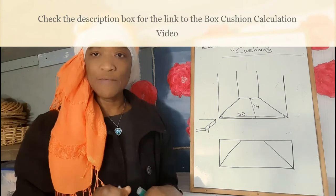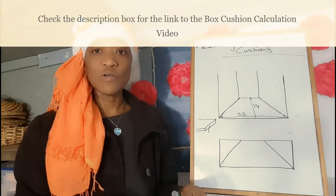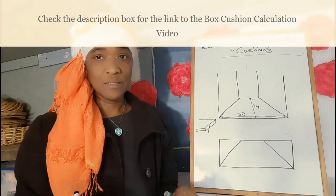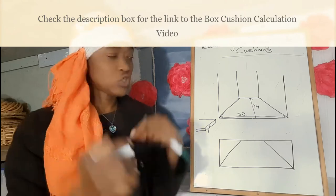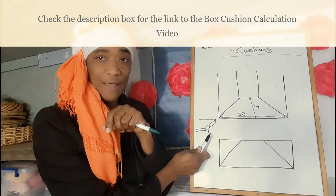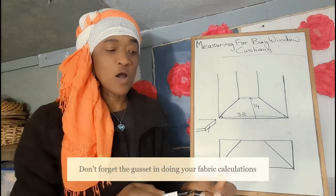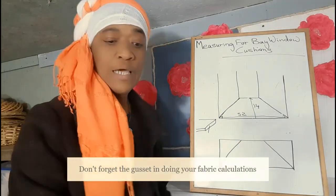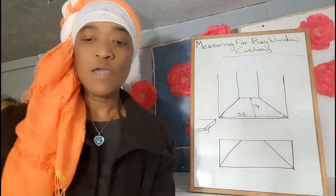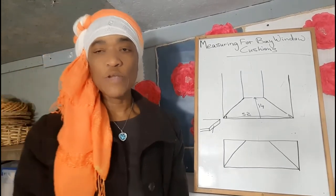Use the same system I gave you for the box cushion, because you have to remember that your bay window seat will also have a gusset — that piece that joins the back and the front panels together. So go ahead, get your measurements like you're measuring for a rectangular seat, and use the same system I gave you for the box cushion.